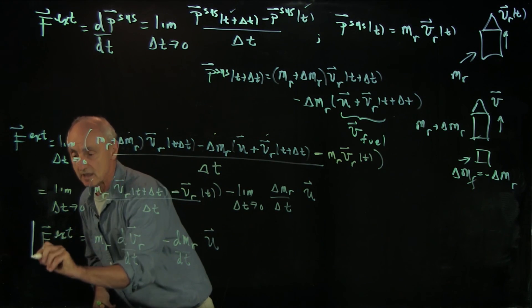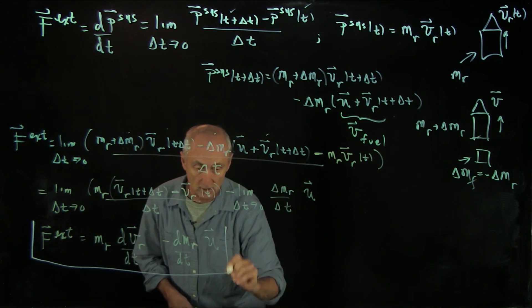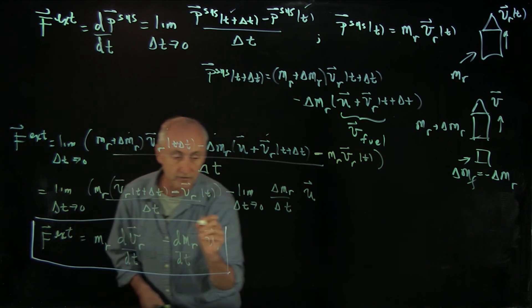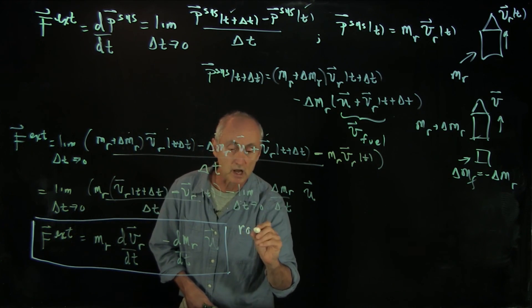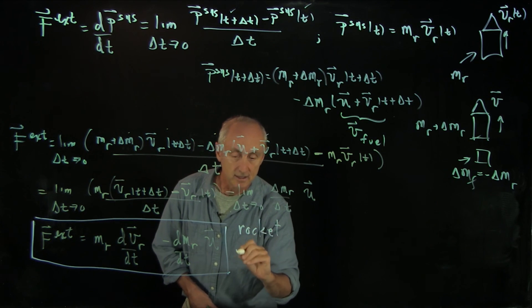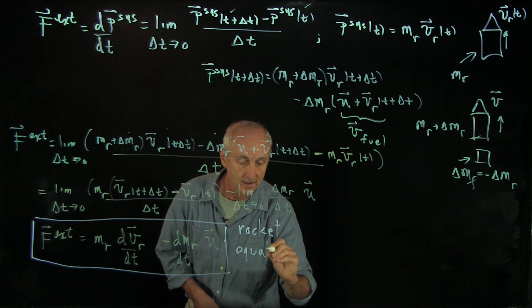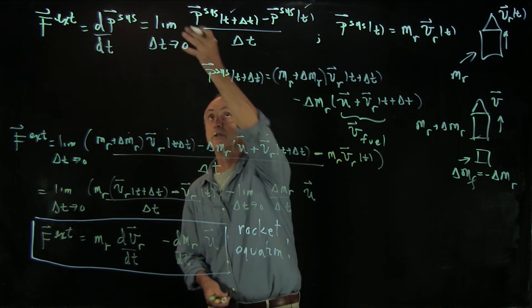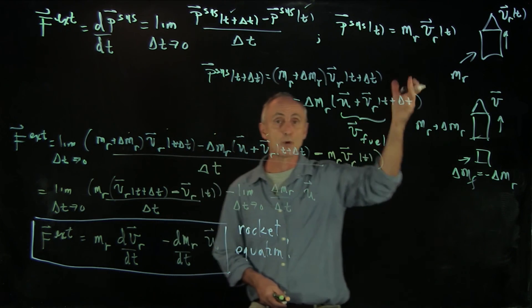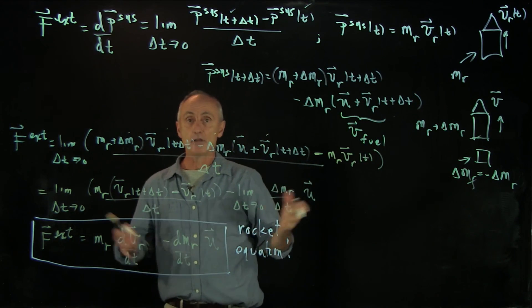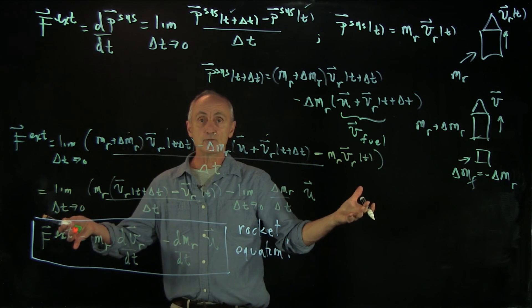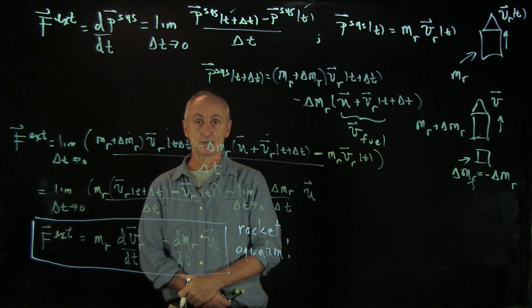So this equation here, I'll box it off, is called the rocket equation, which we've derived from the momentum principle using our momentum diagrams. And you can see that this is what people refer to as rocket science.